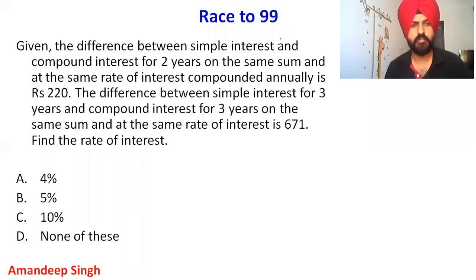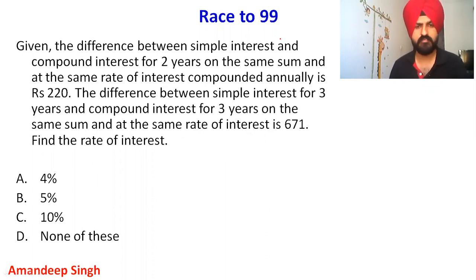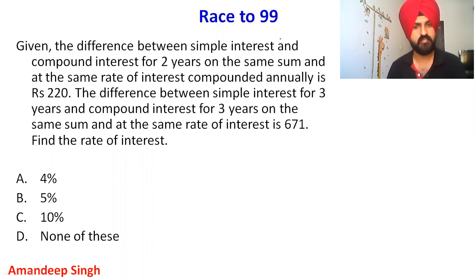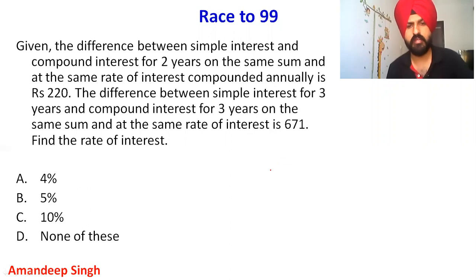Hello everyone. The question is based on simple interest and compound interest. Given the difference between simple interest and compound interest for two years on the same sum at the same rate of interest compounded annually is rupees 220. The difference between simple interest and compound interest for three years on the same sum at the same rate is rupees 671. Find the rate of interest.